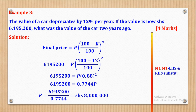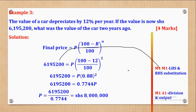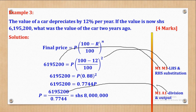That's what they wanted. For marking: M1 for substituting on the left-hand side, M1 for substituting on the right-hand side, M1 for division, and A1 for the output.